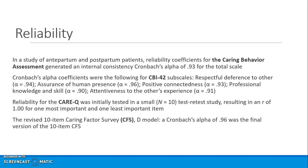Here are some examples of reliability. In a study of antepartum and postpartum patients, the Caring Behavior Assessment got a Cronbach's alpha of 0.93 for the total scale. For the CBI-42, the subscale Cronbach's alphas are all very high, which suggests you may want to decrease the number of items — which was done later. For the KRQ there was test-retest reliability on one item. The Caring Factor Survey's Cronbach's alpha was 0.96 for the final 10-item version.